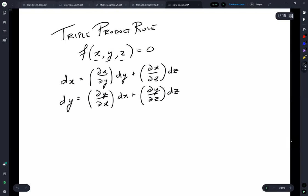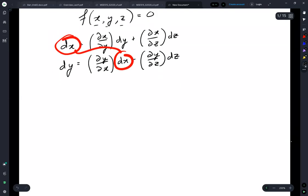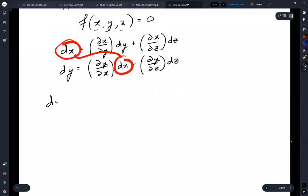Okay, so we've got these two differentials. And now we're going to take and substitute dx into dy. That's going to give us dy is equal to dy dx by dx.